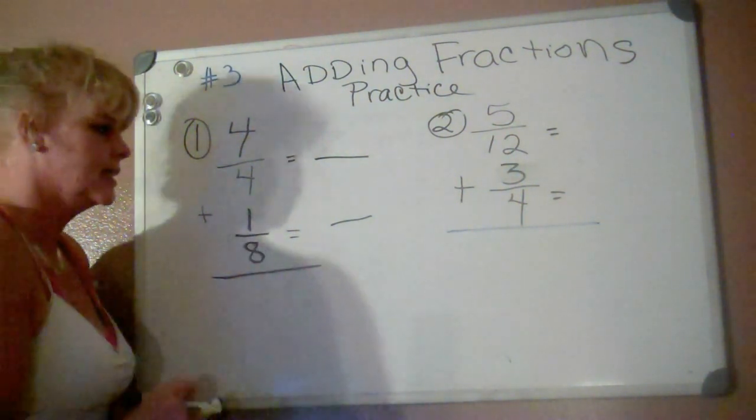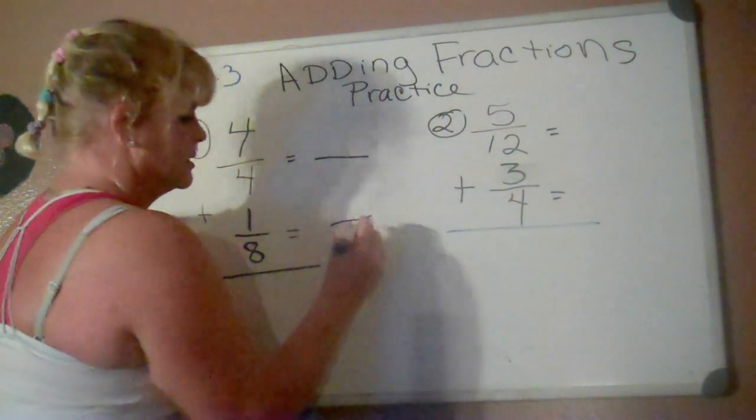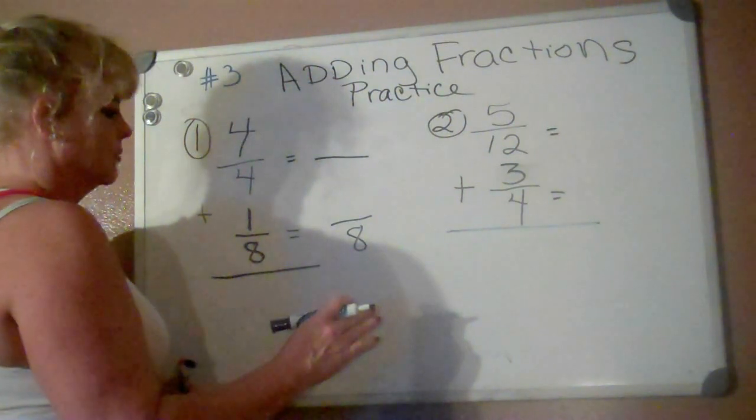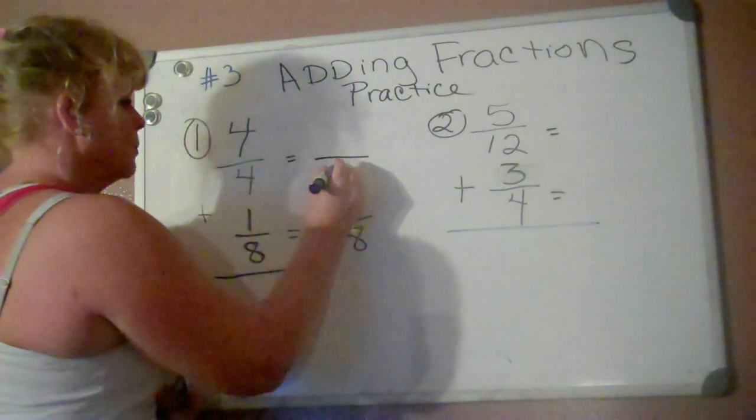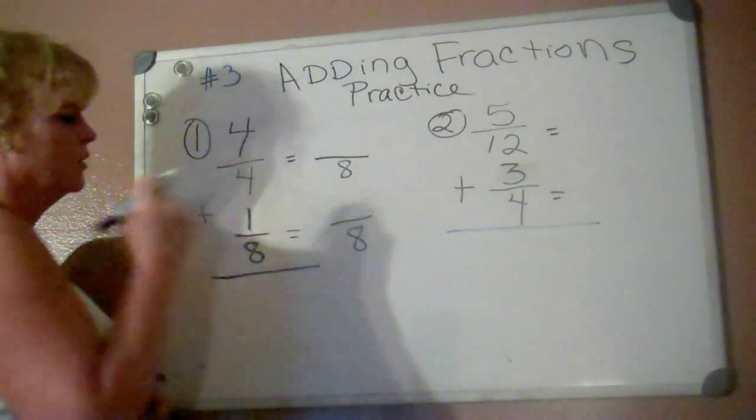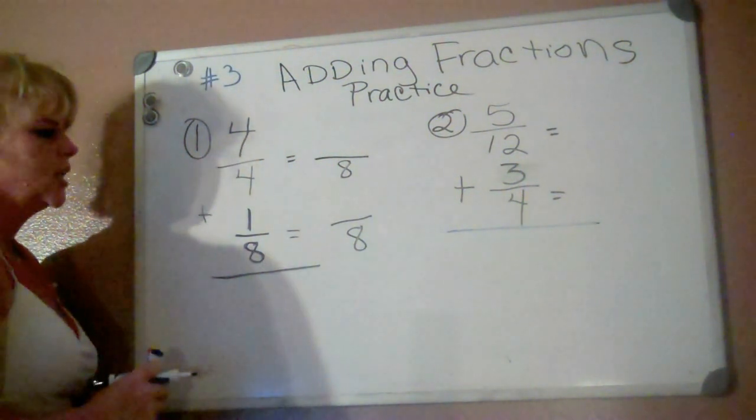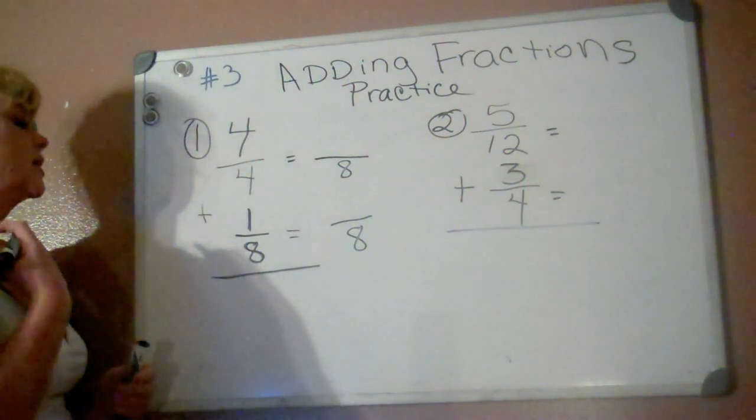So we automatically found out that eight is the number that they both can go into. Eight cannot go into four, but it can go into itself, and four can go into eight. So eight is our common denominator.